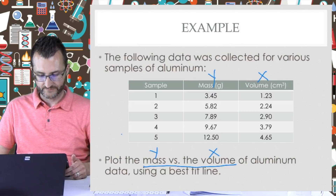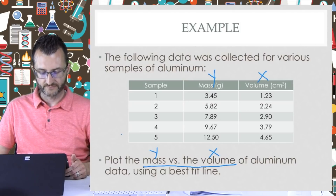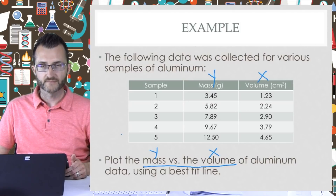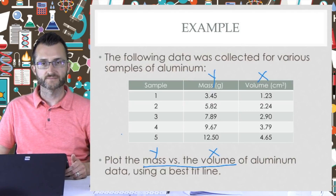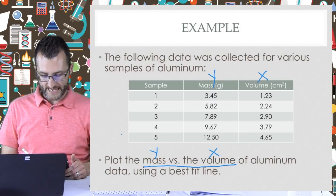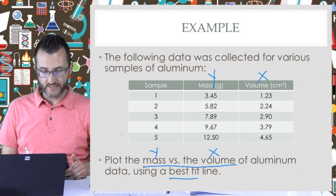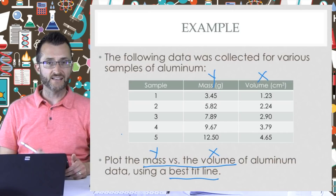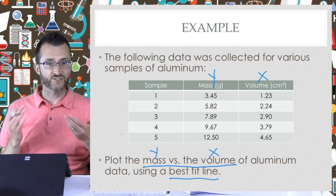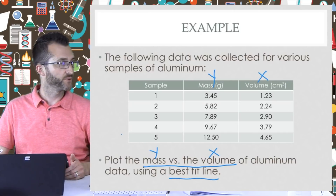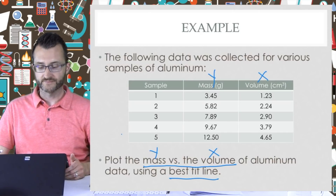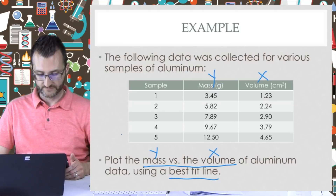Good — good habit to get into as far as labeling your data columns. So what is this graph going to end up looking like? Well, it says using a best fit line, so it's going to be a straight line at the end after plotting all the points. Straight line — not jagged at all or curved. Perfect.